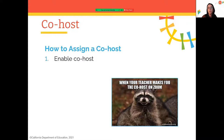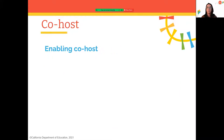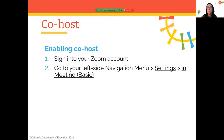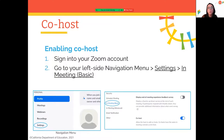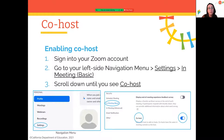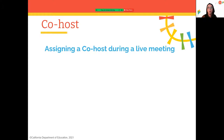To enable a co-host, sign into your Zoom account, go to the left side navigation menu, click Settings, then go to 'In Meeting (Basic),' and scroll down until you see 'Co-host.' Toggle the button so it's blue — that means it's enabled. Now that we've enabled it in settings, we can see how to assign a co-host during an actual live meeting.